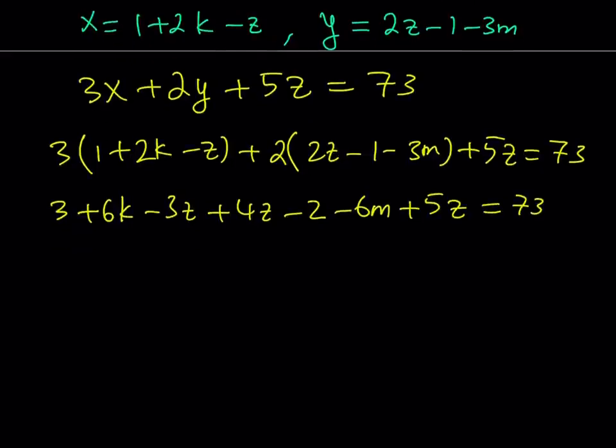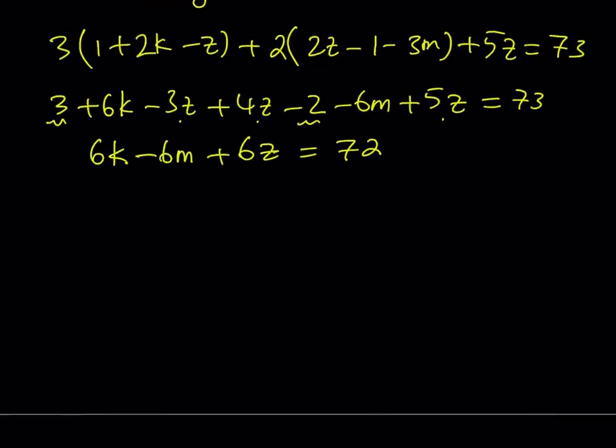And k and m are, by the way, just parameters that we use to express these variables, but at the end, we're going to use them to express all of them. All the x, y, z. So now let's go ahead and simplify this a little bit, and that's going to look like 3 plus 6k minus 3z plus 4z minus 2 minus 6m plus 5z is equal to 73. And then let's go ahead and add these up. So from here, I get 6k and then minus 6m, and then z is going to give me, let's see what we get. This is 1z, and then plus 5z is going to be 6z, which is cool. That's really cool. And then I have the 3 minus 2, which is equal to 1. If you subtract 1 from 73, you're going to get 72. That's nice. Notice that everything divides out nicely.